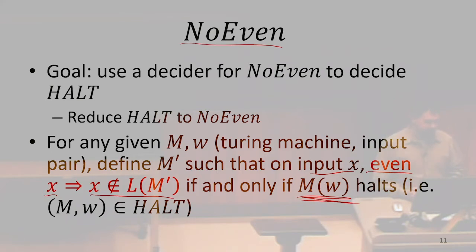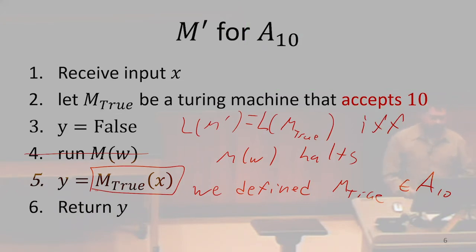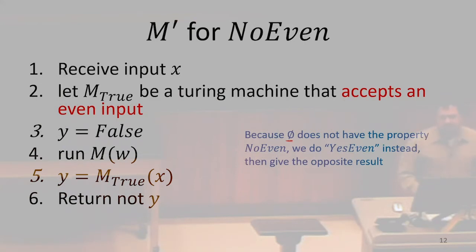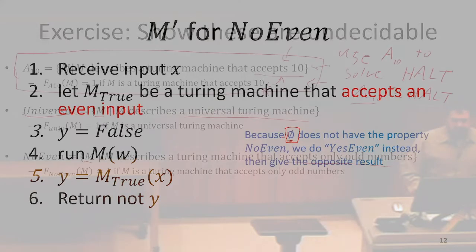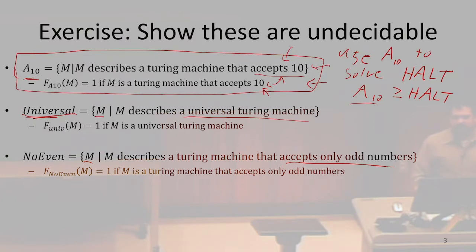For our other two examples — the universal example and the A10 example — if M ran forever on w, we accepted nothing; we could never hit our return statement. So any Turing machine that accepted the empty language did not have the property of either of those examples. But the empty language does have the property of not having even numbers in it.